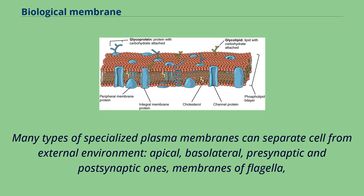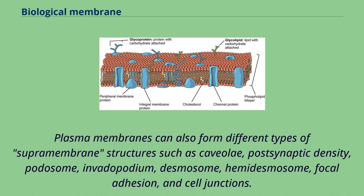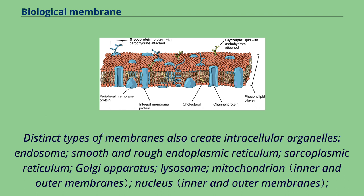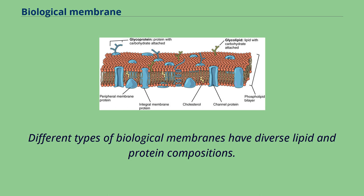Many types of specialized plasma membranes can separate a cell from its external environment, including apical, basolateral, presynaptic, and postsynaptic membranes, as well as membranes of flagella, cilia, microvilli, filopodia, and lamellipodia, the sarcolemma of muscle cells, and specialized myelin and dendritic spine membranes of neurons. Plasma membranes can also form different types of supramembrane structures such as caveolae, post-synaptic density, podosome, invadopodium, desmosome, hemidesmosome, focal adhesion, and cell junctions. Distinct types of membranes also create intracellular organelles, including endosomes, smooth and rough endoplasmic reticulum, sarcoplasmic reticulum, Golgi apparatus, lysosomes, mitochondria, nucleus, peroxisomes, vacuoles, cytoplasmic granules, cell vesicles, and secretory vesicles.